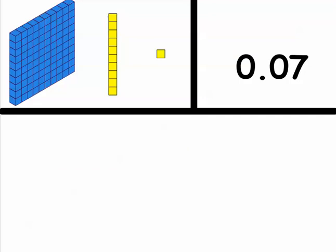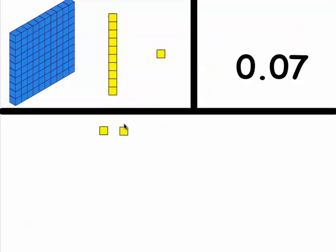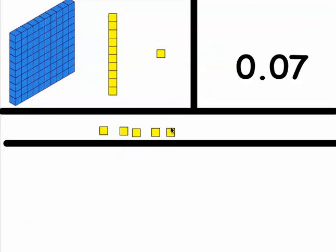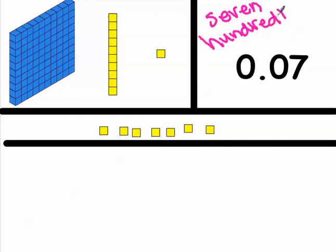Let's get one more practice. We have no whole numbers, so we won't use any hundreds blocks. We have no tenths, so we won't use any tens blocks, but we have seven hundredths. We represent that with 7 ones blocks — one, two, three, four, five, six, seven. This represents seven hundredths. If we write this in words: write the number first — seven — and then the place value — hundredths. Seven hundredths.